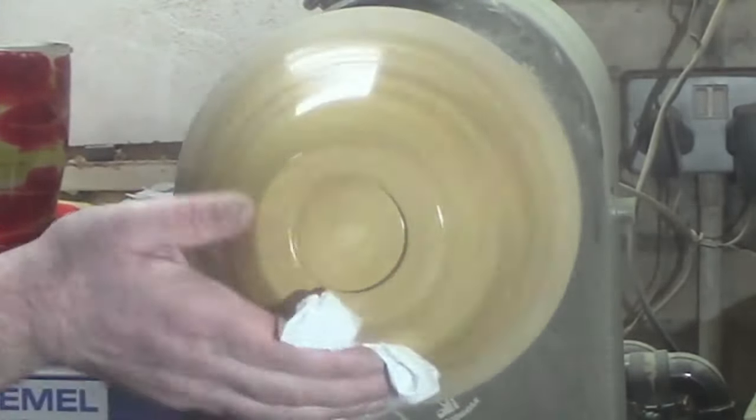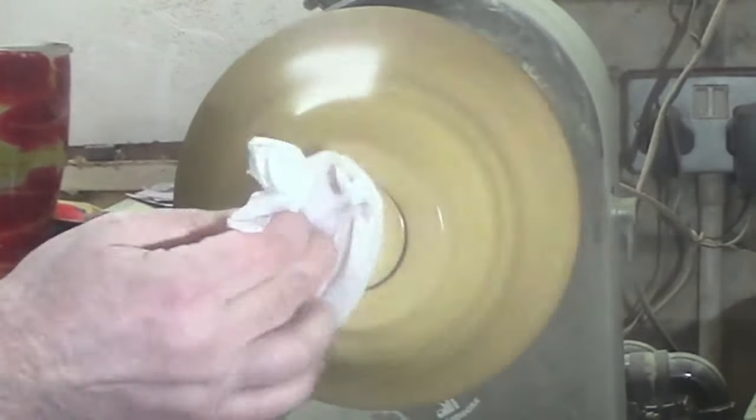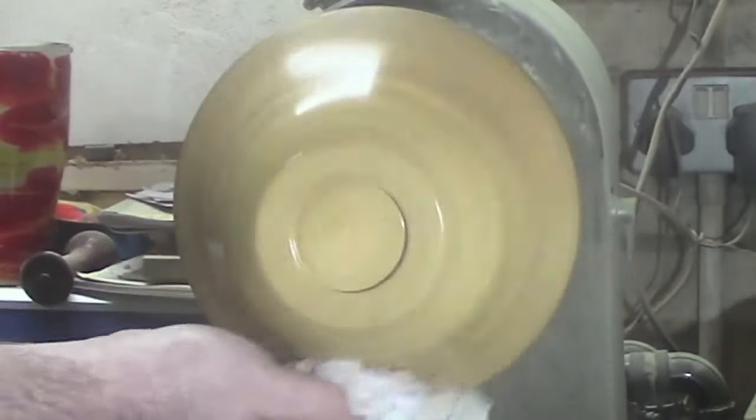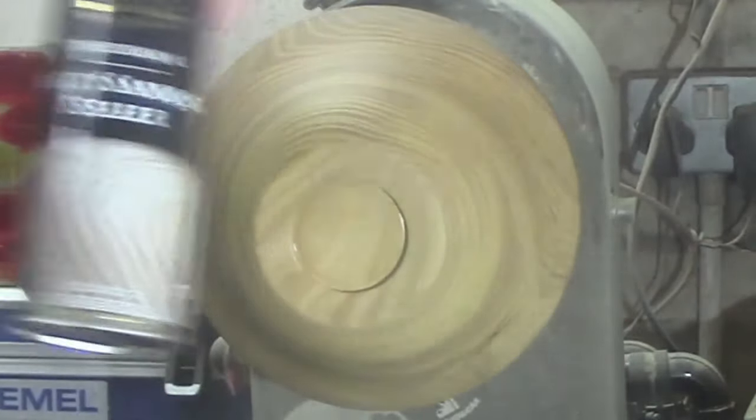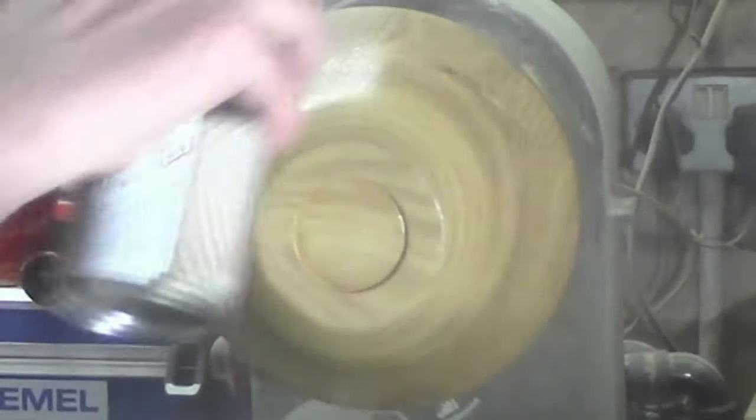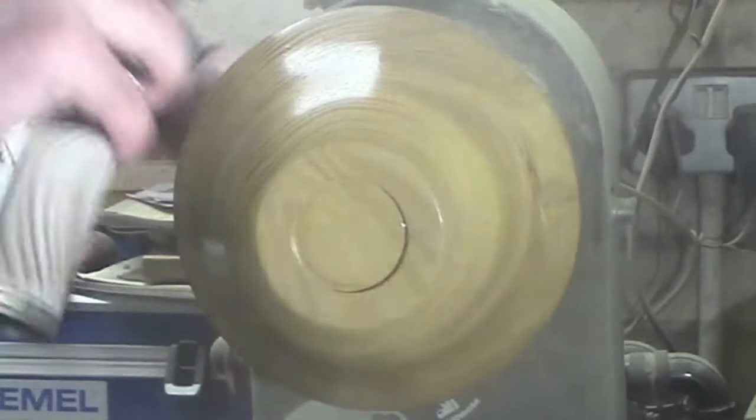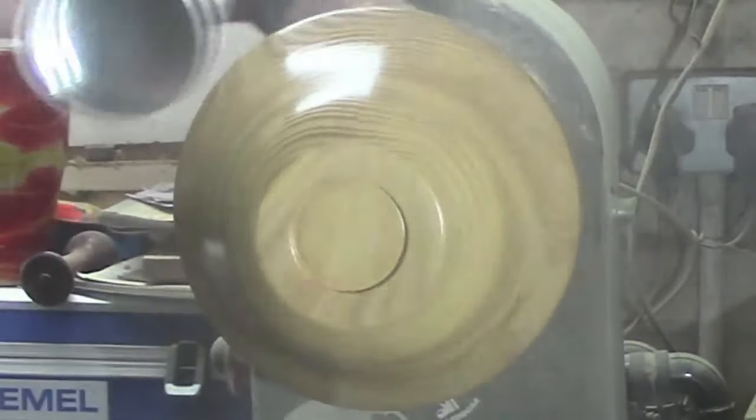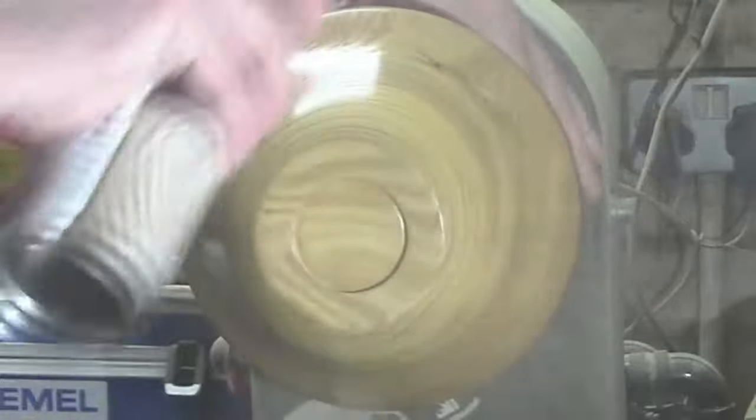We're just going to clean the grain out now with some methylated spirits or denatured alcohol, and some sanding sealer from Hampshire Sheen.